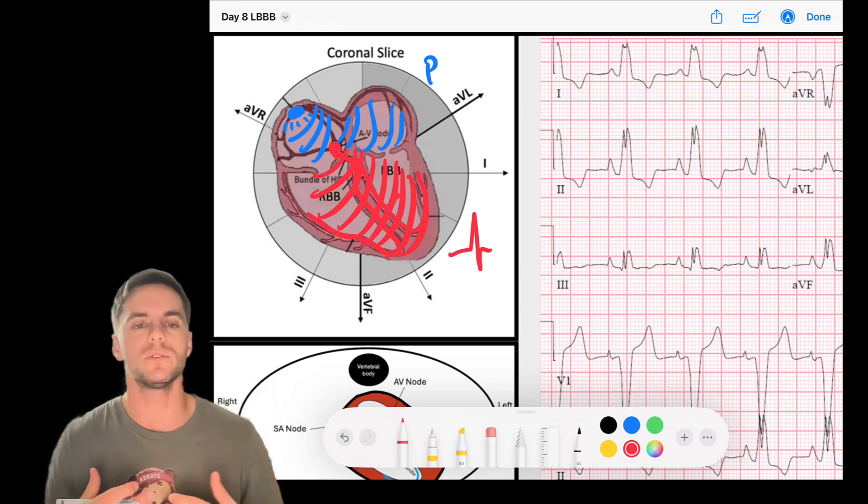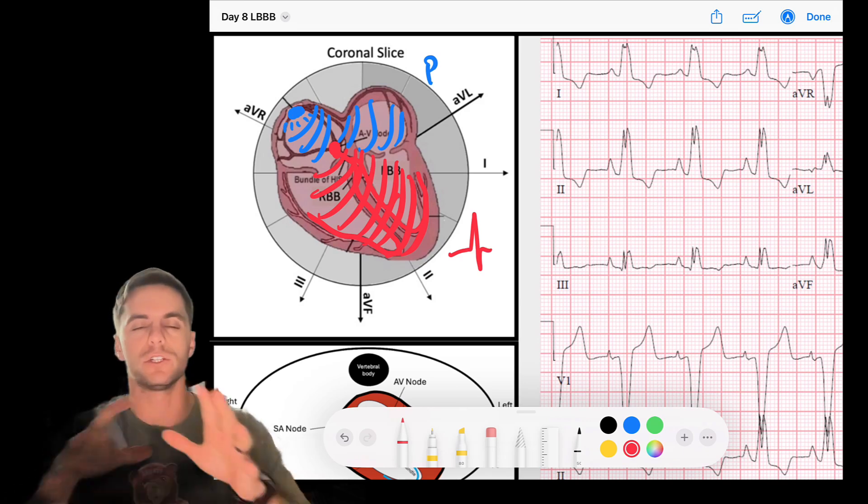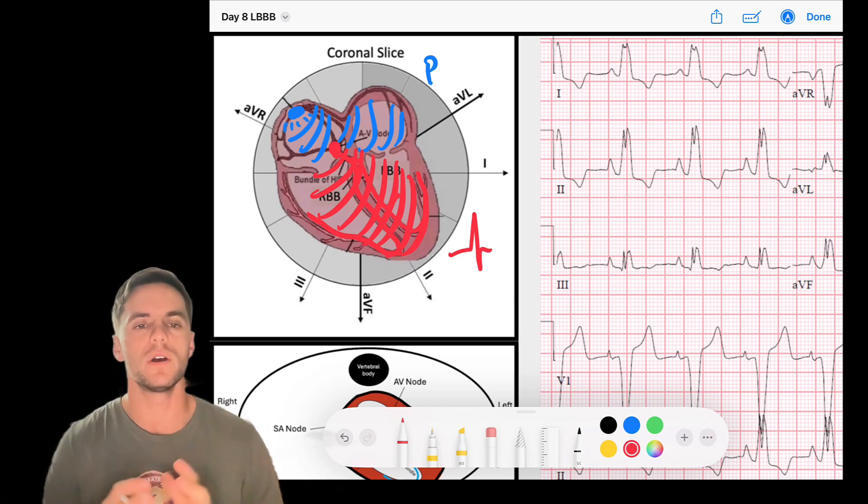So the His bundles, the right and left bundles, they're all contributing to this narrow, rapidly conducting QRS complex. We like that because we want our ventricles to squeeze at the same time. Good synergistic squeeze.